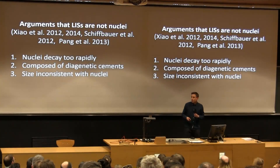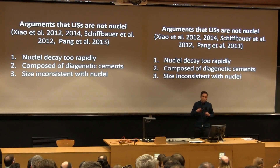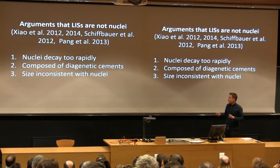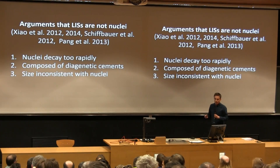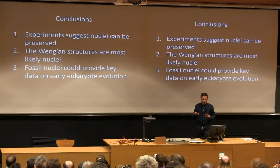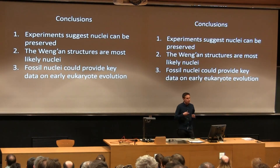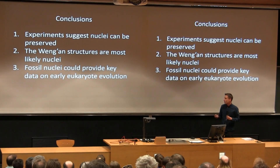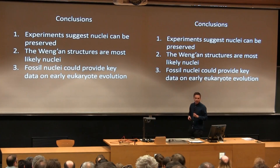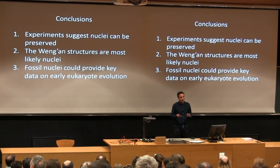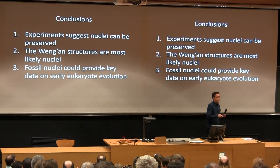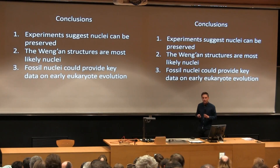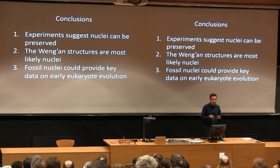To summarise, all of the objections which have been raised to these structures being nuclei are now problematic in the light of new data. We consider that nuclei are indeed the best interpretation of the data available. In the case of these particular fossils, the preservation of nuclei doesn't have massive implications for phylogenetic affinities — most people would accept that they're eukaryotic.